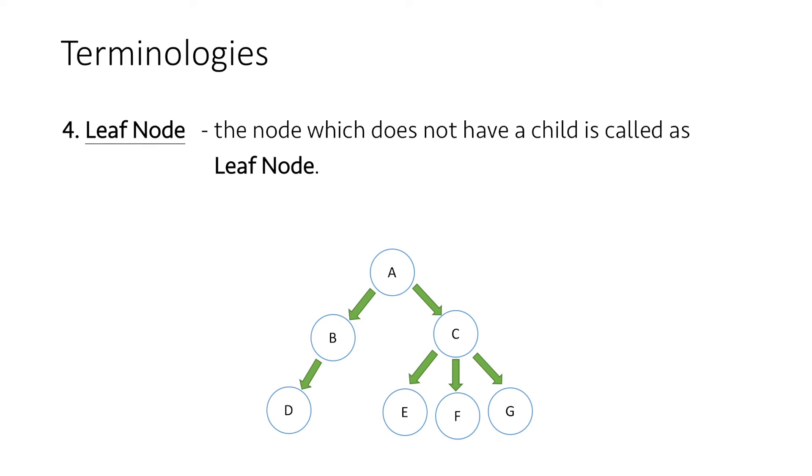Next we move on to leaf nodes. The node which does not have a child is called a leaf node. As we can see in this example, nodes D, E, F, and G have no child, thus they are leaf nodes. The leaf nodes are sometimes also referred to as external nodes.